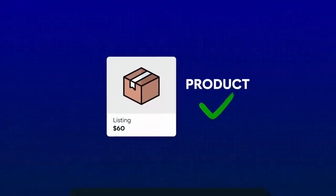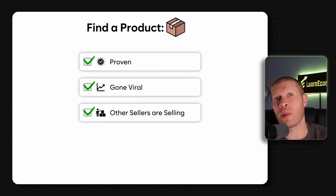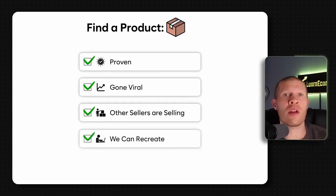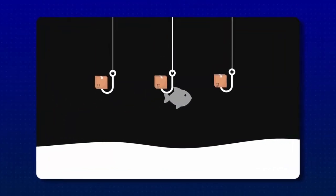Before anything else, we need to nail the product and the product-market fit. If we have a TikTok Shop page or access to TikTok affiliates, but have a product people don't want — or one that doesn't fit that audience — we're still going to struggle even with the best video in the world. The first thing we need to do is figure out a product that's proven, already gone viral, and that other people are currently having success with.